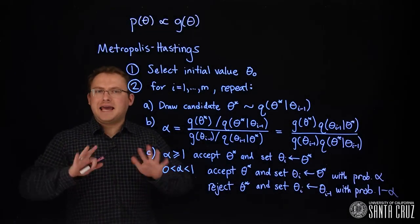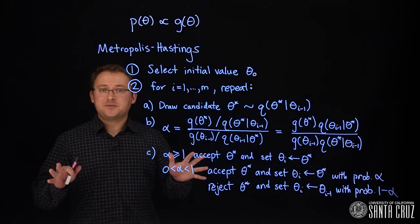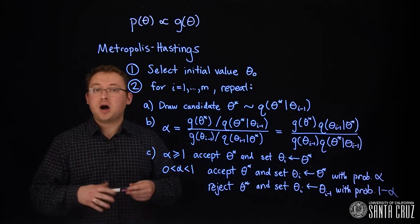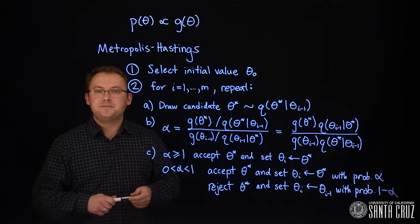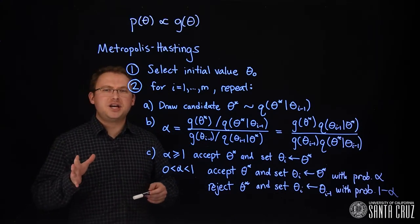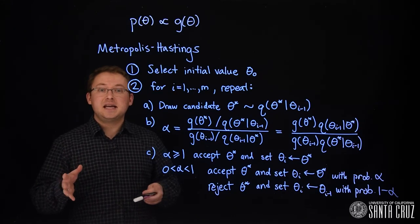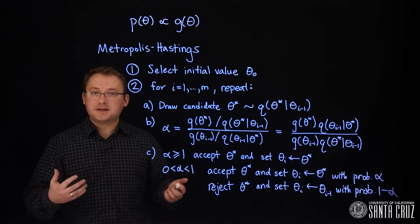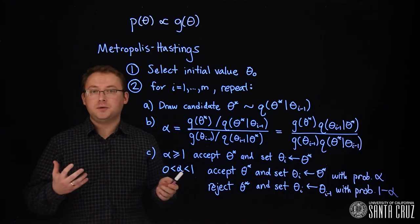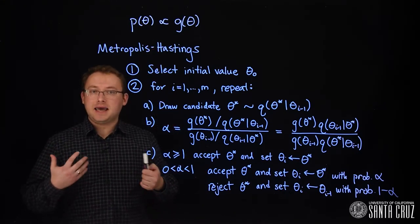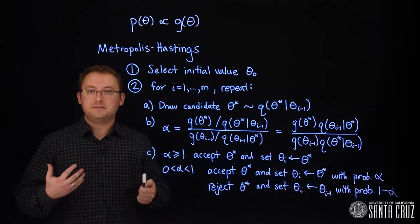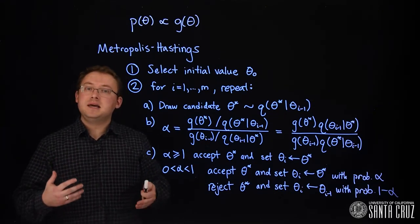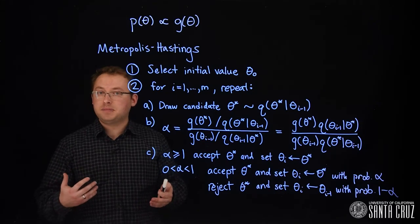Clearly, not all candidate draws are accepted. So, our Markov chain sometimes stays where it is, possibly for many iterations. How often you want the chain to accept candidates depends on the type of algorithm you use. If you approximate p with q and always draw candidates from that distribution, accepting candidates often is a good thing. It means that q is approximating p well.